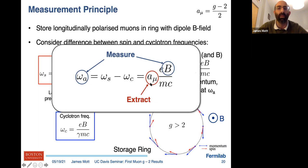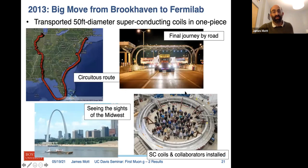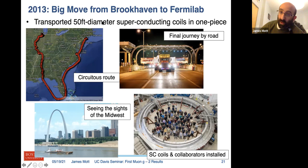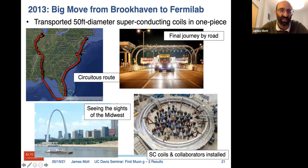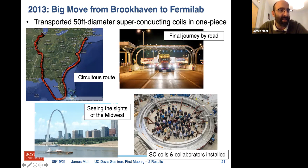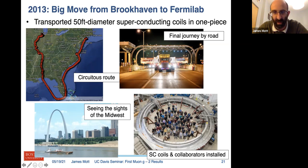Where do you find a big magnet like that? Thankfully there was one not being used at Brookhaven anymore. We transported it in one piece because the superconducting coils don't come apart. We started at Brookhaven on Long Island, went down on a barge down the coast, around Florida, up the Mississippi, through the arch at St. Louis, and then the final part through a toll booth on the journey to Fermilab. Here it is installed — you can see the scale with our collaboration inside.